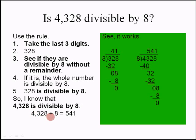So I know that 4,328 is divisible by 8 — divided by 8 will leave no remainder. We can divide it and see.